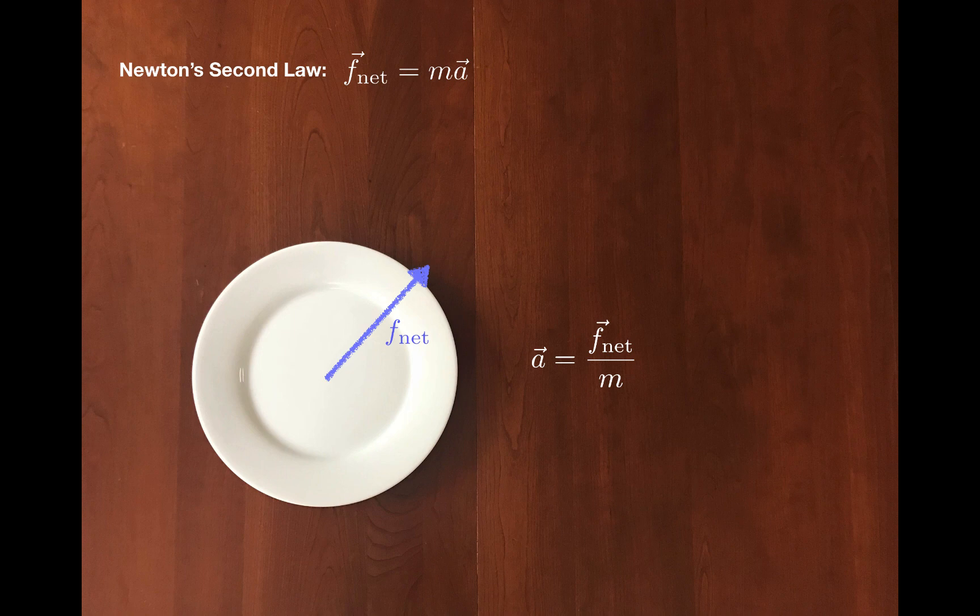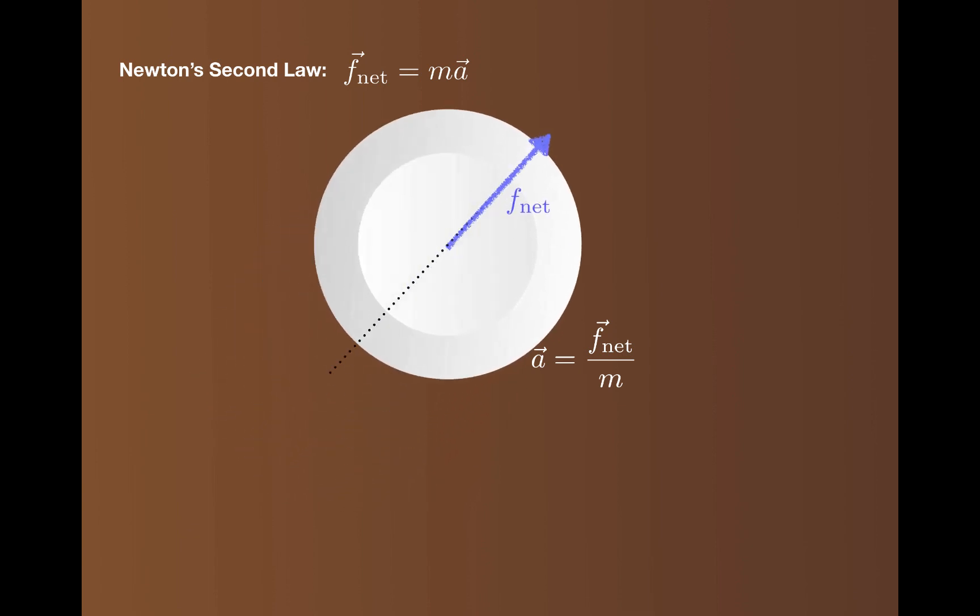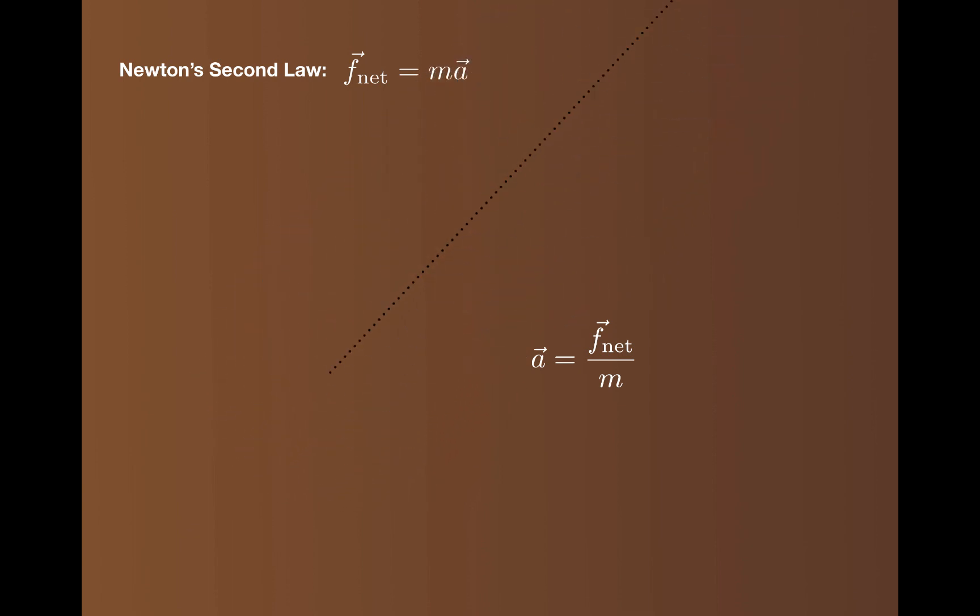Because mass is a scalar, the acceleration vector of the object will be in the same direction as the net force, and if two objects with different masses are subject to the same net force, the one with the smaller mass will have the greater acceleration.